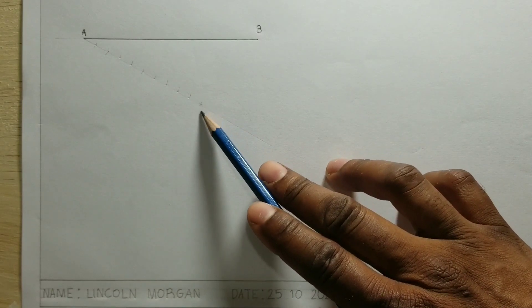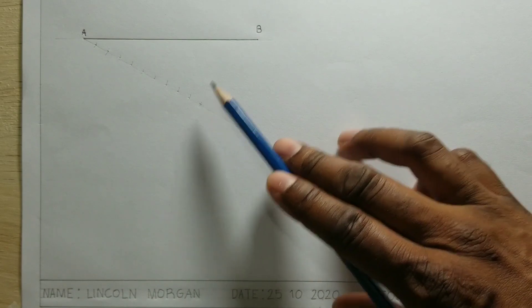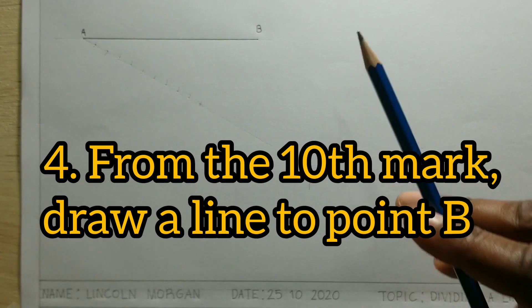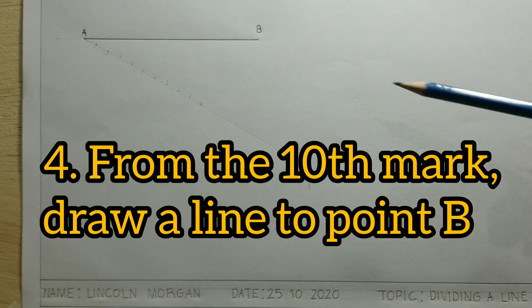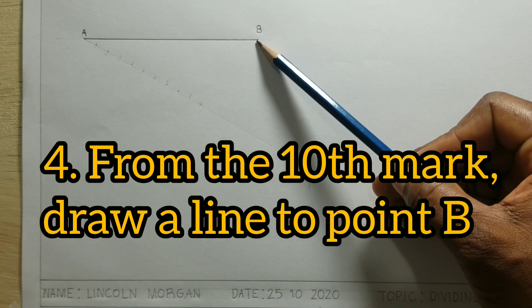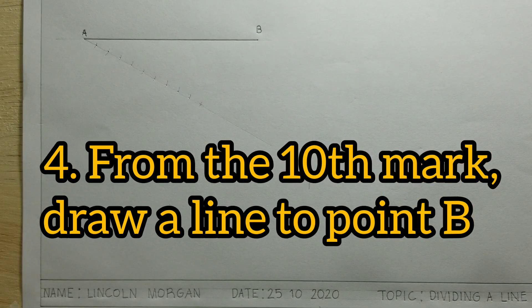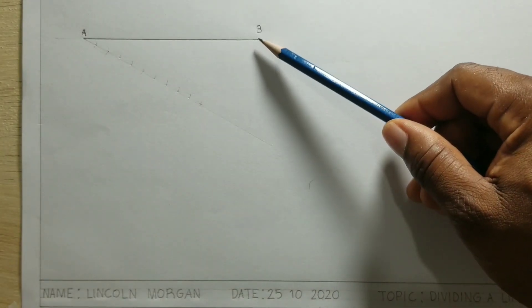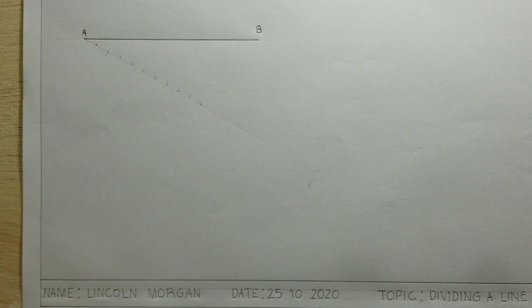The next step is that from the 10th mark, we are going to draw a line from the 10th mark to point B. So if we wanted to divide this line into 8 parts, we would draw a line from the 8th mark to point B. But because we want to divide this line into 10 equal parts, we are going to be drawing a line from the 10th mark to point B. We will now do so.